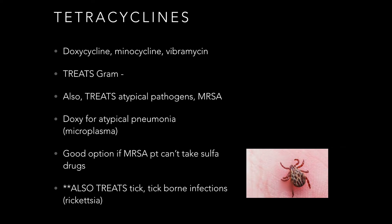Next we have tetracyclines. These also treat gram-negative bacteria, and they are also effective against atypical pathogens, MRSA, and atypical pneumonia. They are a good option for treatment of MRSA if a patient can't take the sulfa drugs — so if there's a sulfonamide allergy, we have doxycycline as backup. Also really important: doxy is going to be our first go-to with any tick-borne infections, so Rocky Mountain spotted fever or Lyme disease — treat those patients with doxy.